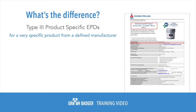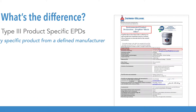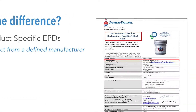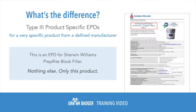Type 3 product-specific EPDs are for a very specific product from a defined manufacturer. You'll see it pretty easily — this EPD is for Sherwin-Williams Block Filler. Nothing else, only this product. You can see it's clearly labeled for Sherwin-Williams and it's clearly labeled PrepRite Block Filler.